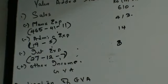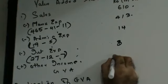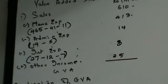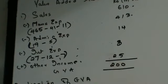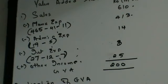Other income — look at your income statement, just below sales, other income is 25. So your GVA will be: 610 minus 413 minus 14 minus 8 plus 25 = 200. My Gross Value Added is 200.